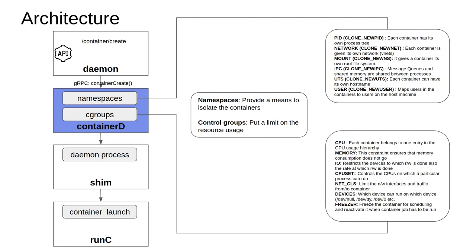On the control groups side, there are different control groups you can put a process into. The CPU control group can say that a container process has no right to use more than 20% of CPU. You can also set a CPU set, saying 50% of the CPUs on this machine belong to this particular process. Similarly, you can impose memory constraints, such as this process cannot have more than 1 GB of RAM, or put restrictions on devices — for example, a process can only write to the hard disk and nowhere else.